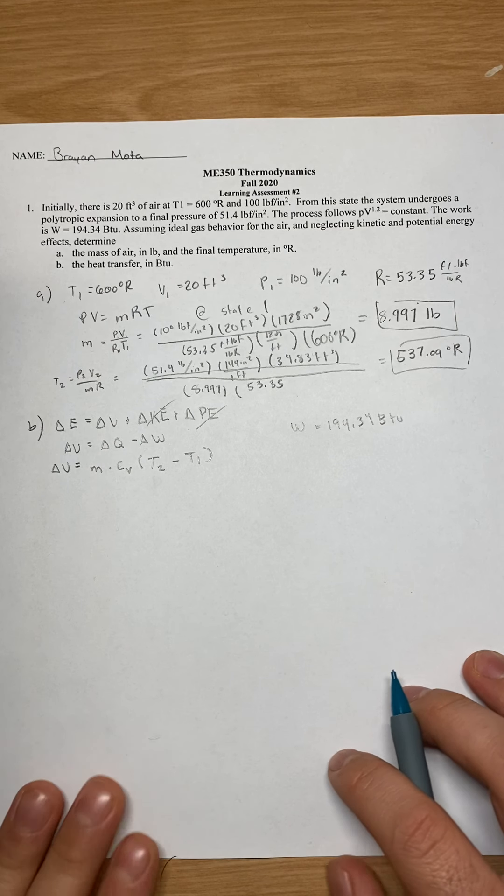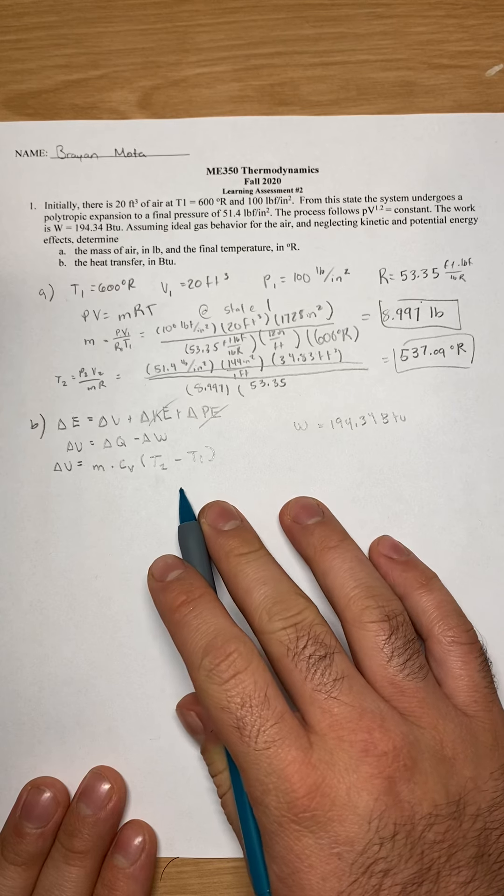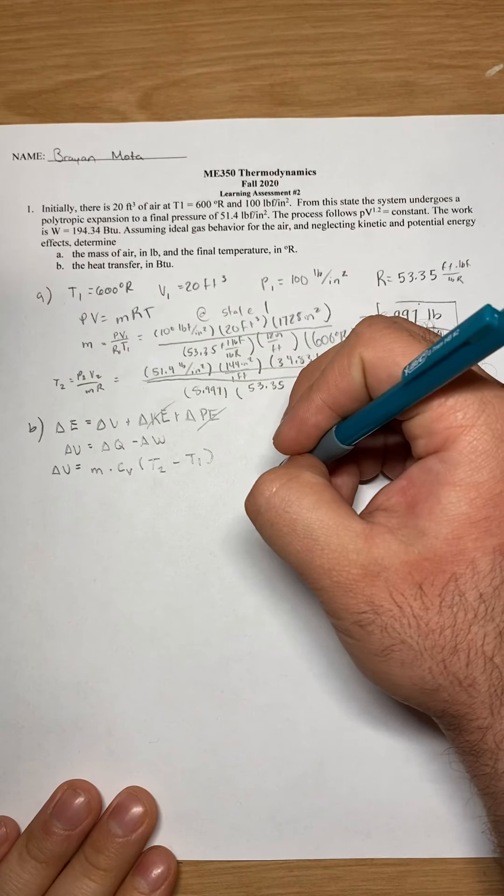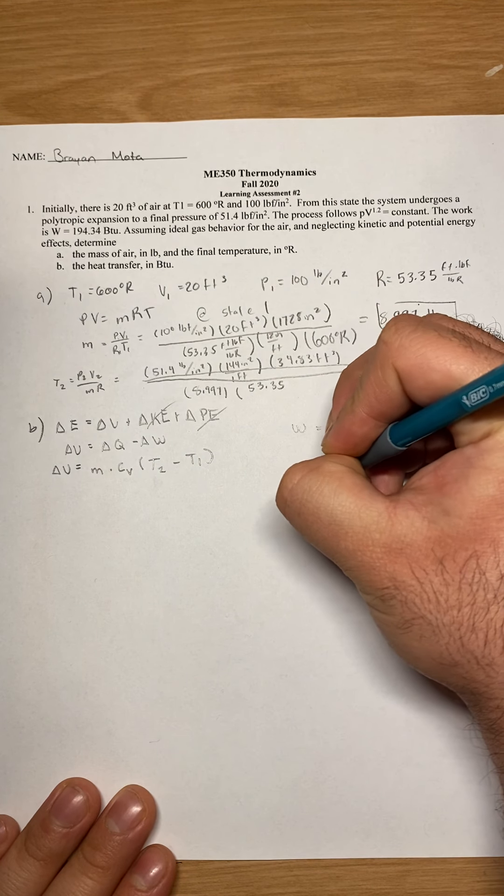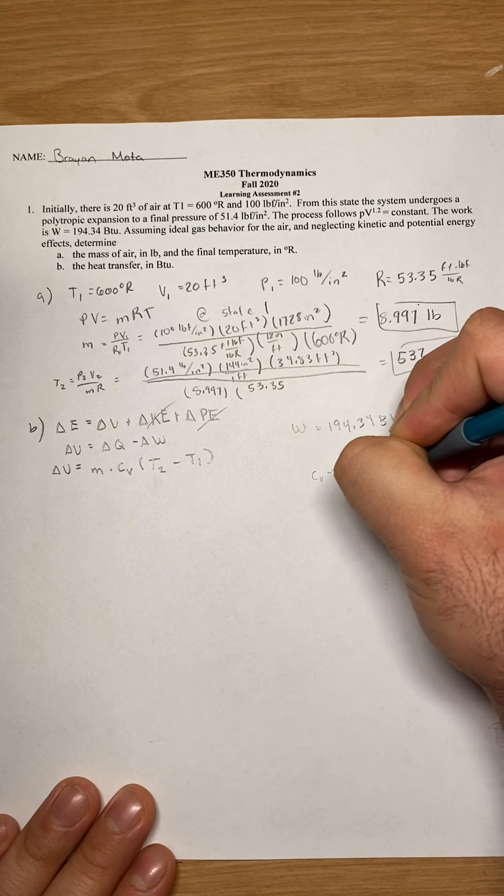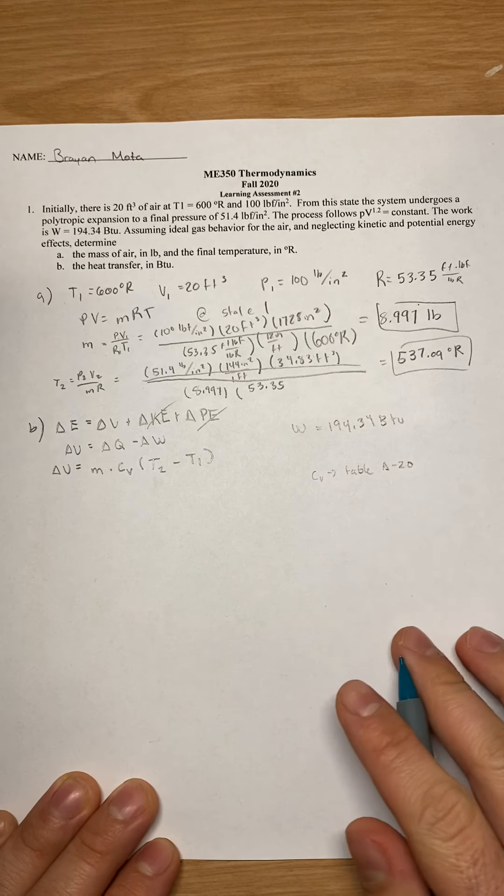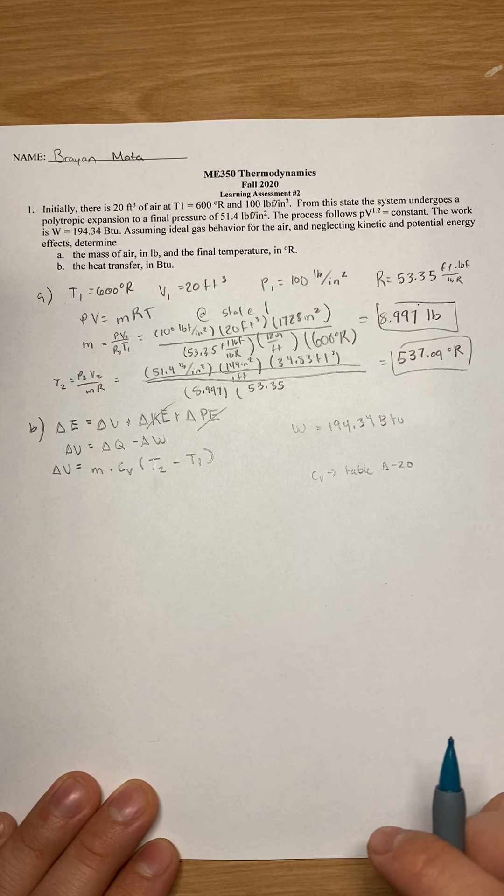So here I utilize the equation of delta U equals mass times our Cv, which is our specific heat, times our T2 minus our T1. So we know our mass, we need to solve for our Cv, and we know our two temperatures.